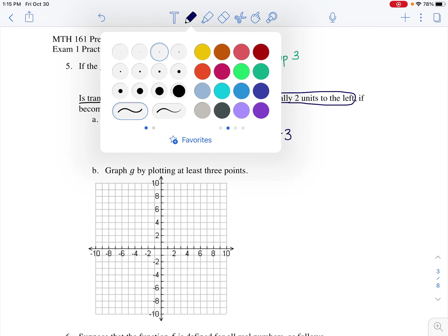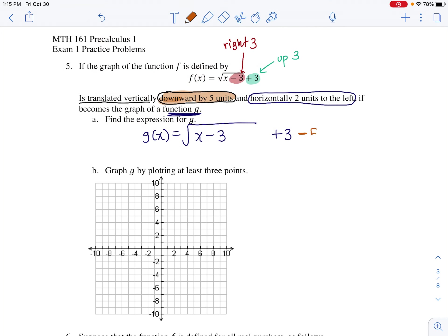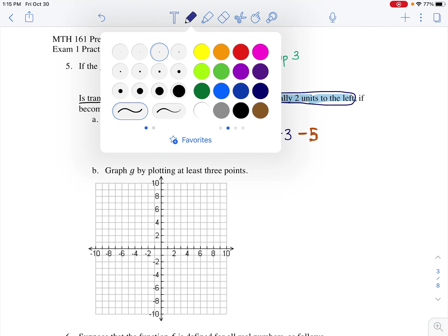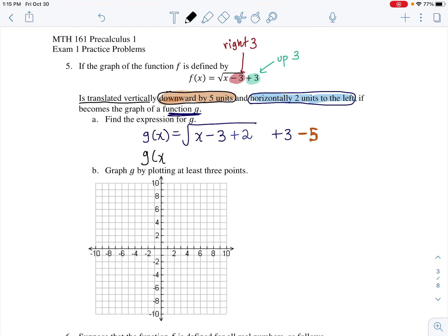Downward by five units, that's going to be subtracting five outside, so subtract five outside right next to that plus three. And the next one, horizontally two units to the left, that's going to be adding two inside the square root. Now what we're going to do is simplify this. So g(x) equals square root of x minus one, and then outside is going to be minus two. So we got it.